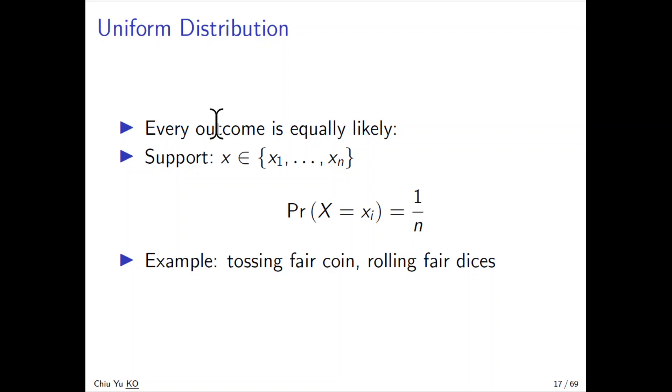Uniform is very simple - everything is equally likely. The possible values are denoted by x1, x2, up to xn. It can be integers or anything, but everything is equally likely, so the probability is one over n for each outcome. Examples include tossing a fair coin or rolling a fair die - everything is equally likely.